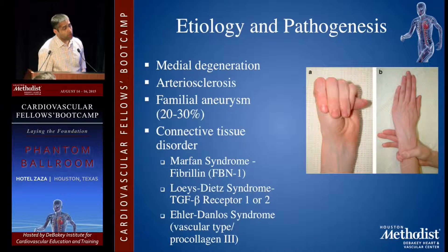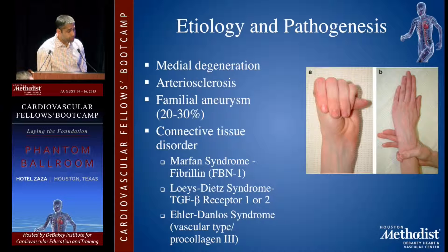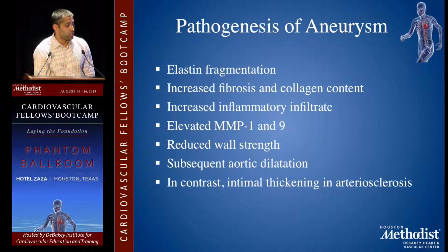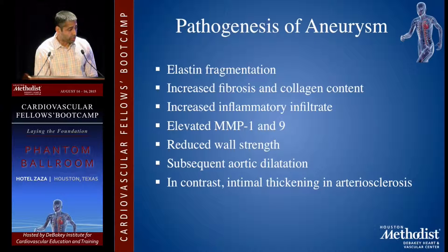Etiology and pathogenesis include medial degeneration and arteriosclerosis. It runs in families in about 20 to 30% of cases. Connective tissue disorders also result in aneurysm formation, including Marfan syndrome, Loeys-Dietz syndrome, and Ehlers-Danlos. The pathogenesis involves elastin fragmentation, increased fibrosis and collagen content, increased inflammatory infiltrates, elevated MMPs 1 and 9, and reduced wall strength leading to subsequent aortic dilation.